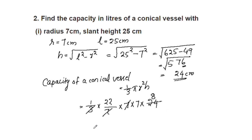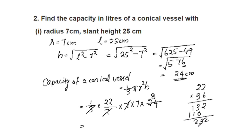We multiply: 22 × 7 × 8 = 22 × 56 = 1232. So the capacity of the conical vessel is 1232 cm³.